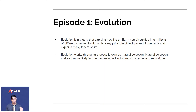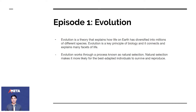Evolution is a theory that explains how life on earth has diversified into millions of different species. We have common names for species like dog, cat, or human, but in reality all of those cats are differentiated into different species too. Species is how we differentiate different organisms, and evolution is a key principle of biology that connects many facets of life.